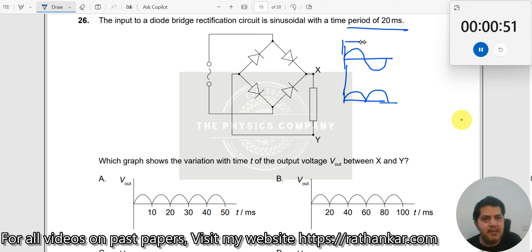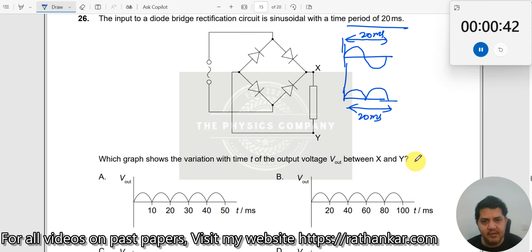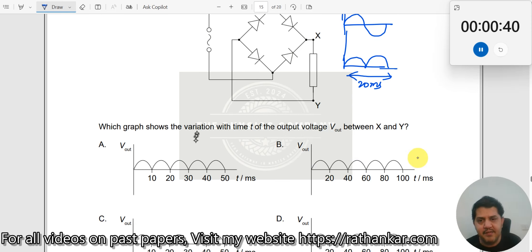This is 20 milliseconds, which means the distance between two loops here should also be 20 milliseconds, right? Now let's look at the graph. Which graph shows the variation in time of the output voltage?